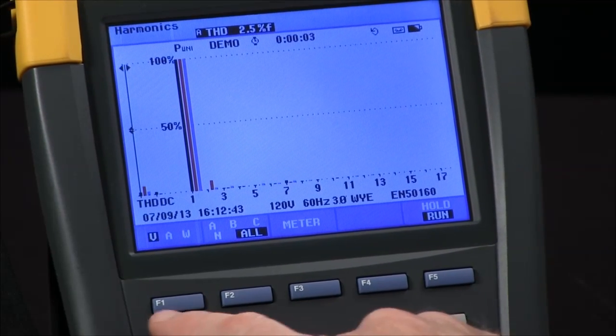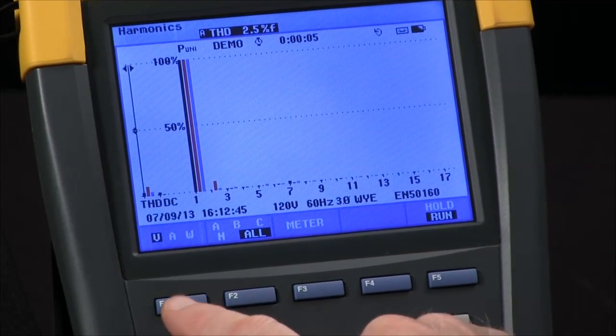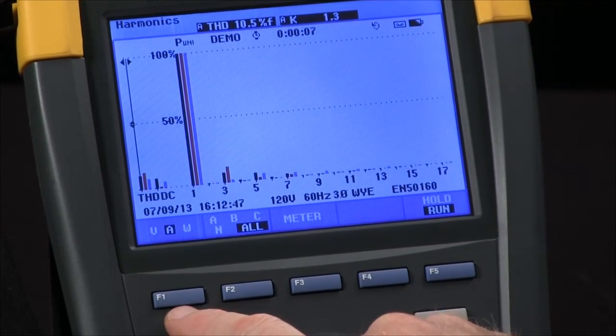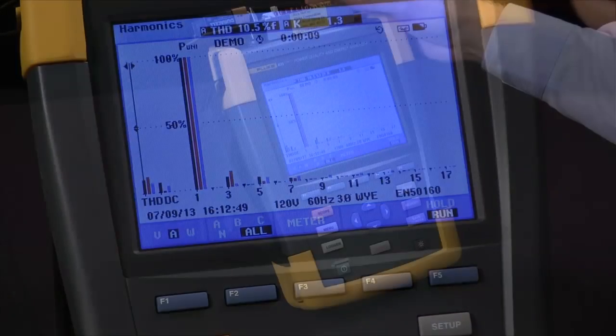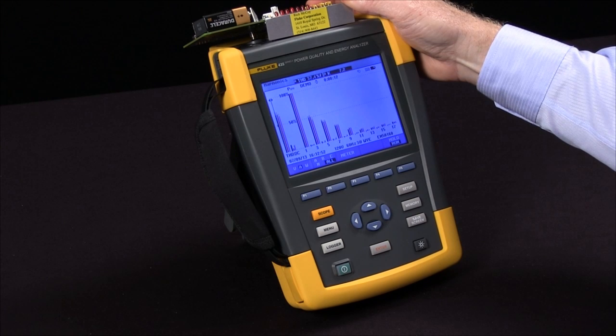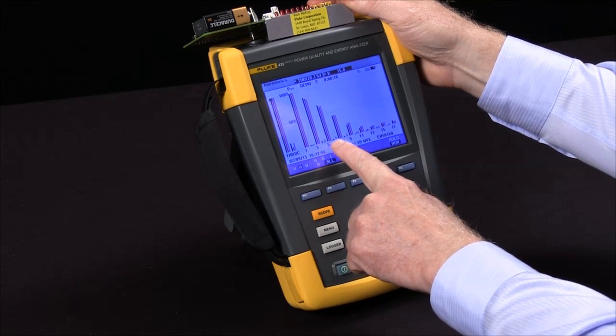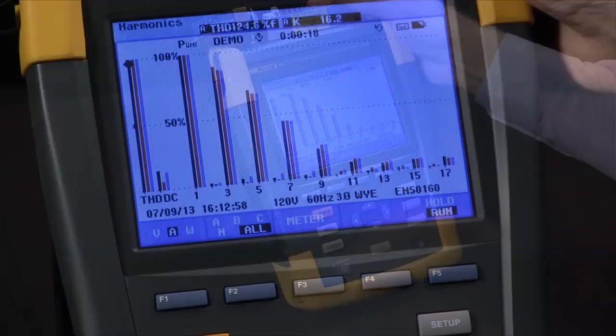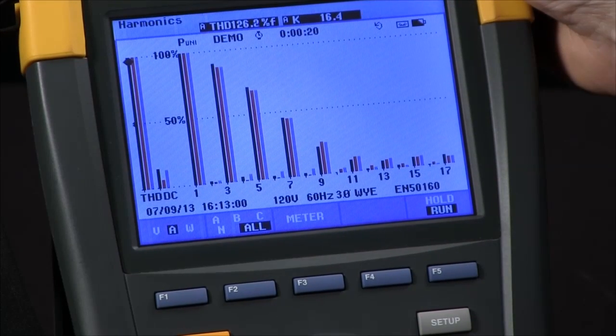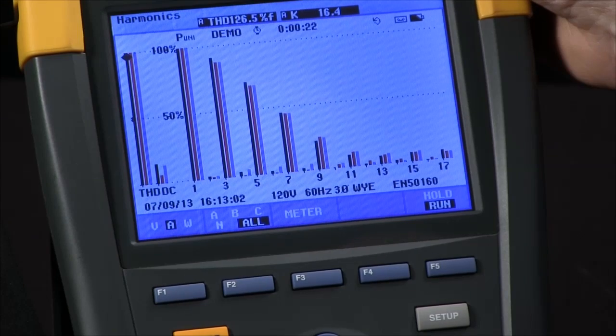Most harmonics are going to show up in amperage, so I'll use the F1 button to toggle the amps and generate some harmonics. In this case we can see that the third is the most prevalent, followed by the fifth and the seventh, indicative of a single phase power supply.